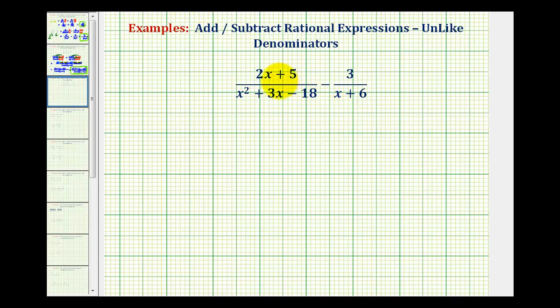So the first step is to factor the denominator of this fraction here, and we're also going to put parentheses around the numerators and denominators. For our first fraction, we'll have the quantity 2x plus 5 over, now we'll go ahead and factor our denominator.